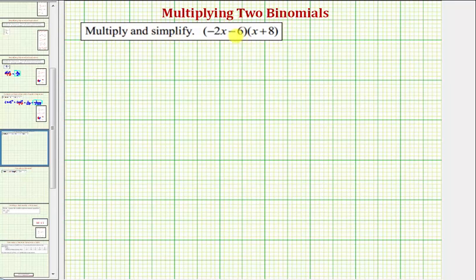We want to multiply and simplify, and here we're given the product of two binomials. We have the quantity negative two x minus six times the quantity x plus eight.